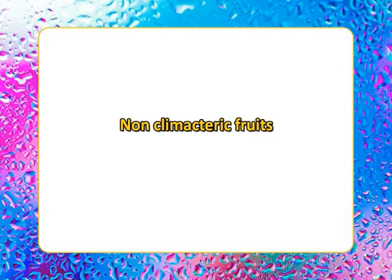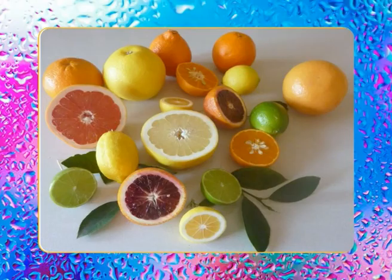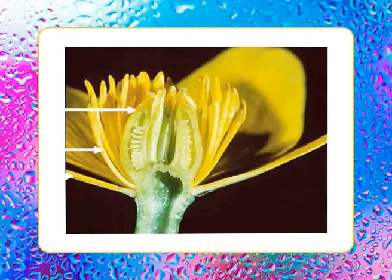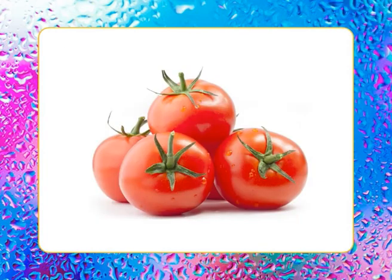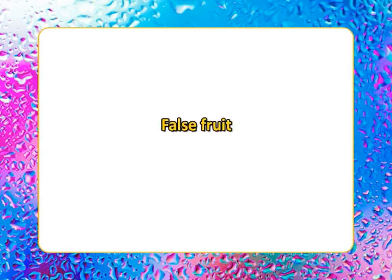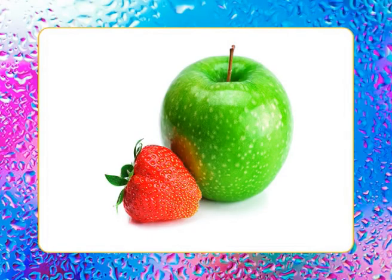Non-climatic fruits ripen at a lower rate after harvesting, have lower respiration rate, low respiration coefficient, and more shelf life. Examples include lemon, lime, orange, and sweet lime. True fruits are derived from the gynoecium part of the flower — for example, tomato. False fruits are developed from the gynoecium and other floral parts — examples include apple and strawberry.